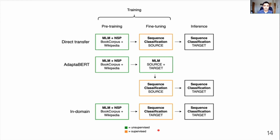AdapterBERT extends direct transfer by including an extra masked language modelling stage during fine-tuning. MLM here is performed on a combination of the source and target domain data, unlike during pre-training when it's performed on generic English text. What makes this extra powerful is that MLM is an unsupervised stage — creating MLM training examples doesn't involve any political bias annotations, so no extra labelled target domain data is needed by AdapterBERT, which is perfect for our use case of social media comments where we don't have any annotated data.